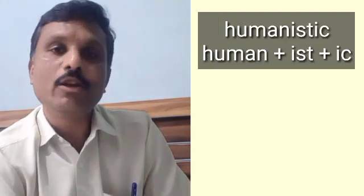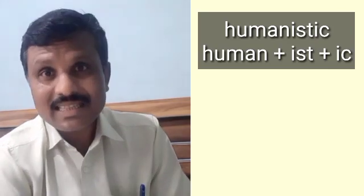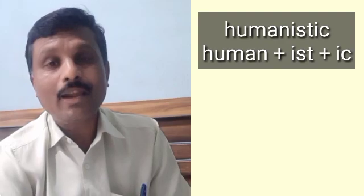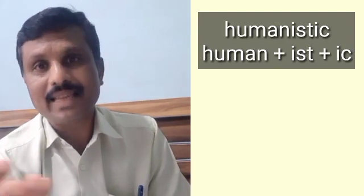The word 'humanist' has two morphemes: 'human' and '-ist'. The word 'humanistic' has three different morphemes: 'human', '-ist', and '-ic', giving us human, humanist, and humanistic.